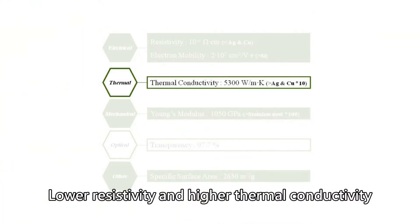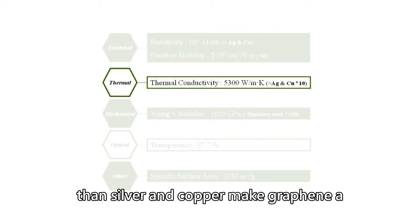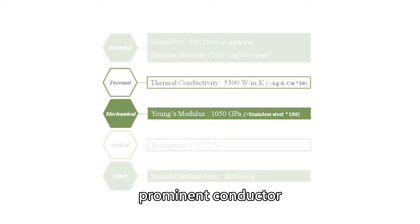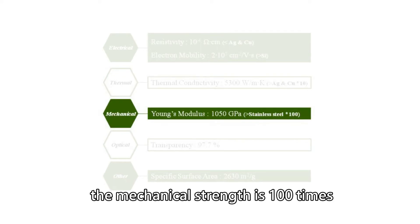Lower resistivity and higher thermal conductivity than silver and copper make graphene a prominent conductor. Besides, the mechanical strength is 100 times stronger than stainless steel.